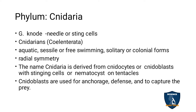Radial symmetry means the body can be divided into two equal halves at any plane — that is called radial symmetry. The name Cnidaria is derived from cnidocytes and cnidoblasts, which are stinging cells or nematocysts present on the tentacles.